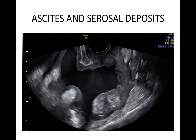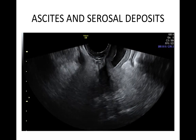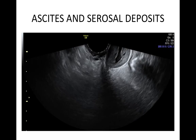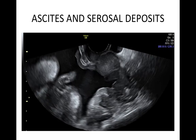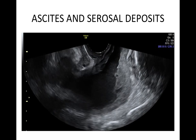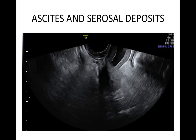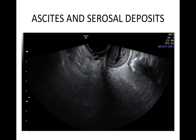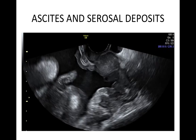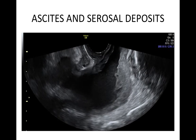When you have scanned a mass and think it might be malignant, it is important to look for evidence of spread such as ascites, serosal deposits and an omental cake. Here is an example of ascites and large serosal deposits as plaque in the pouch of Douglas.